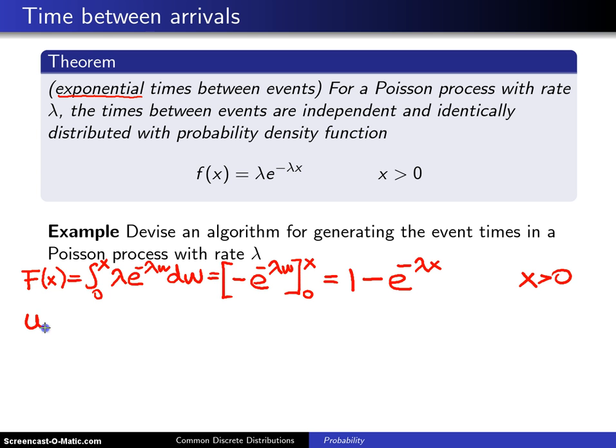We now want to solve this for x, and that will give us a variant generation algorithm. Let's take the natural log. First, subtract 1 from both sides and negate, which gives us this. Then we will take the natural log of both sides of this equation.